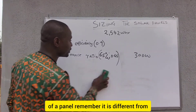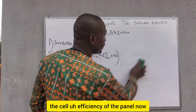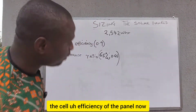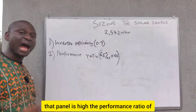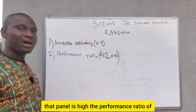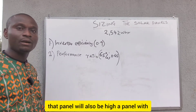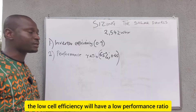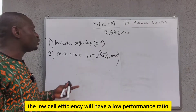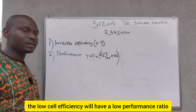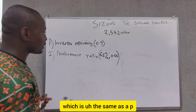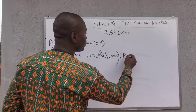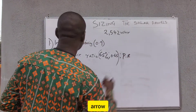Remember, the performance ratio is different from the cell efficiency of the panel. If the cell efficiency is high, the performance ratio will also be high. A panel with low cell efficiency will have a low performance ratio.